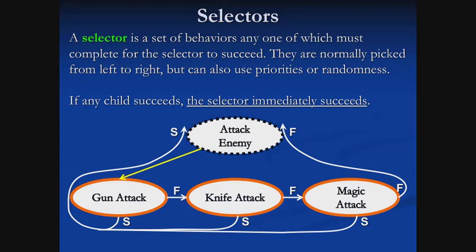So in the example below, we have an attack enemy selector behavior. We're going to start by trying to use a gun attack. If that succeeds, well great, we have now successfully attacked the enemy and we're done. If the gun attack fails, then we'll try the knife attack. If that succeeds, great, we've attacked the enemy, move on. But if the knife attack fails, we can try another, in this case a magic attack, which could also succeed or fail.